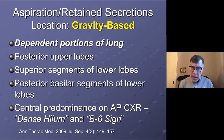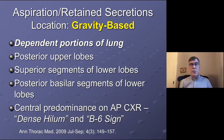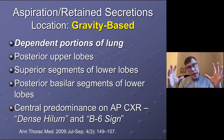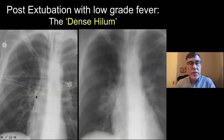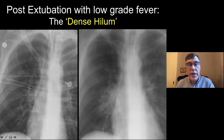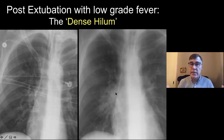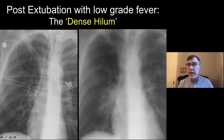A quick statement about the so-called dense hilum or B6 sign: anybody who's intubated or been extubated supine — the hilum will look big, ill-defined, and dense. The hilum is not changed. That is simply atelectasis or aspiration slash retained secretions in the superior segments of the lower lobes overlapping. This is often misdiagnosed as pulmonary congestion and edema. It is not — it is a normal variant.